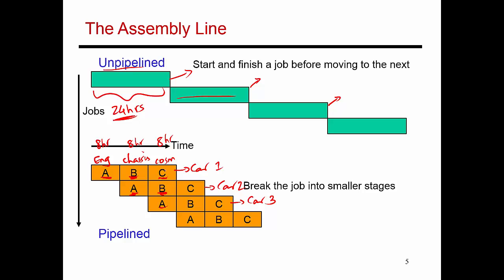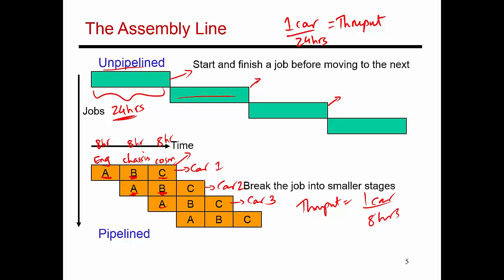And that increases the level of parallelism — there are multiple teams all working together on different cars at the same time. In the unpipelined example, there was one car rolling out every 24 hours. The throughput in the pipelined design is one car every eight hours, because cars keep rolling out with a gap equal to the length of one pipeline stage, which is eight hours. So the throughput here is 3x higher than before, because I've broken up one task into three pipeline stages. Clearly this is better in terms of throughput, and it's roughly the same in terms of latency.